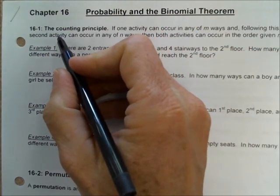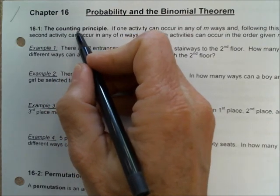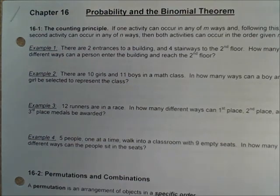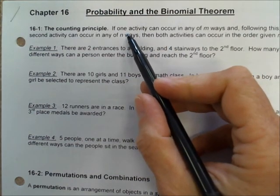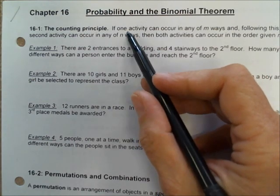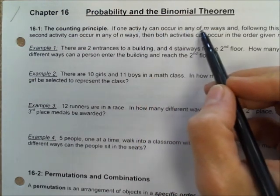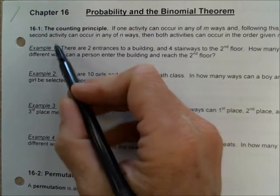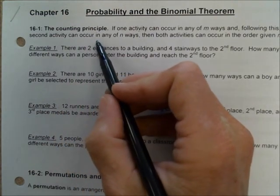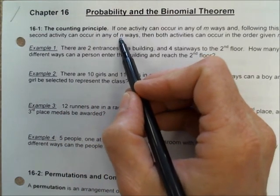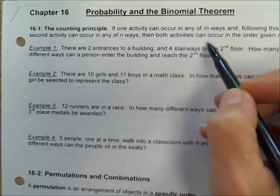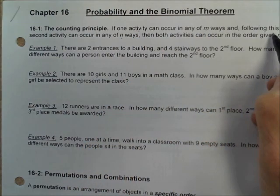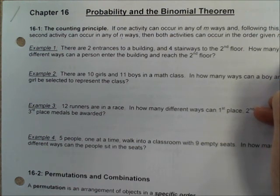The first part of chapter 16 is going to talk about something called the counting principle. You learned about the counting principle back in Algebra 1, and maybe even before that. It means that if you have more than one activity and one activity can occur in any of m ways, then after that a second activity can occur in a different number of ways. If you want to know how many different ways both can occur, you just multiply the number of ways of the first activity times the number of ways of the second activity.